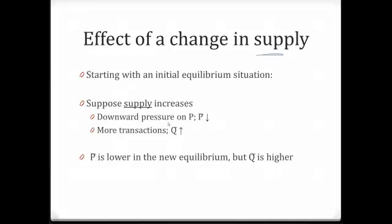The higher supply puts a downward pressure on price because there is excess supply in the market. The equilibrium price goes down. Because of the higher supply, we expect more transactions to take place in the market. Equilibrium quantity goes up. So, this time we observe the equilibrium price is lower, but the equilibrium quantity is higher.